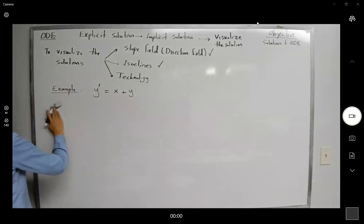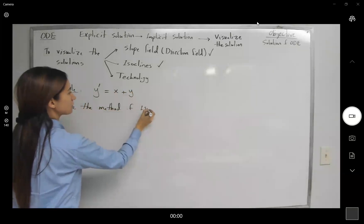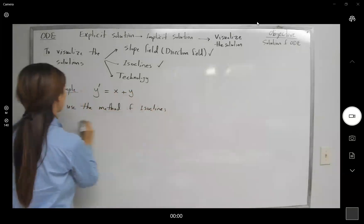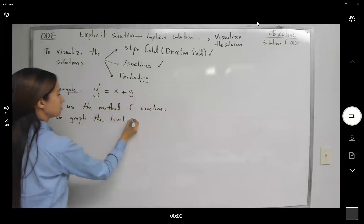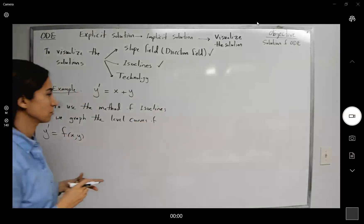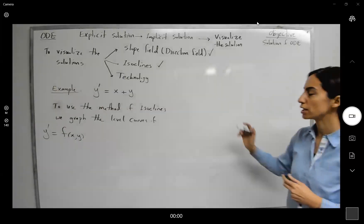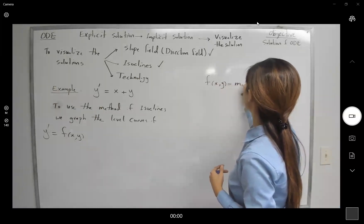So to use the method of isoclines, we graph the level curves of f of x and y, which is equal to the derivative of the function. So how do we graph the level curves? Here we have f of x and y. We set it equals to different constants.